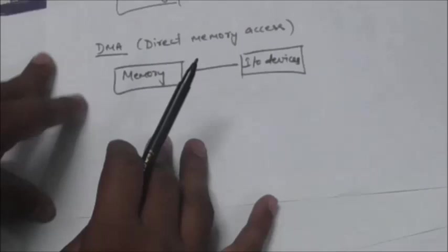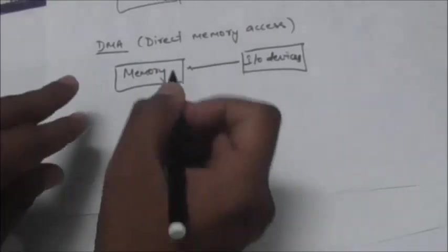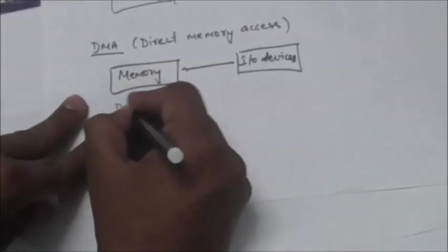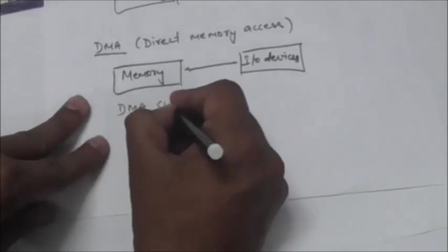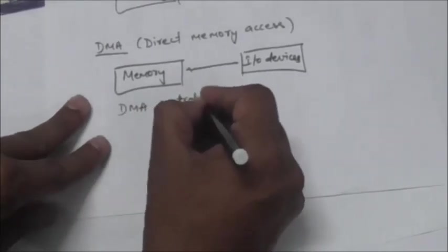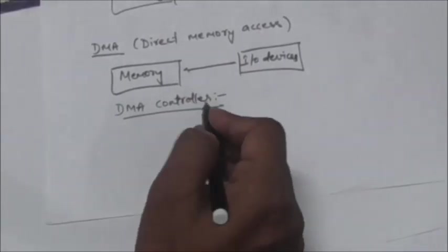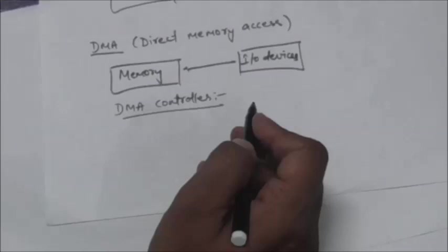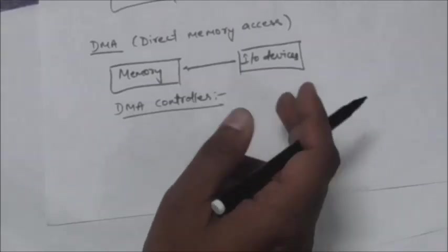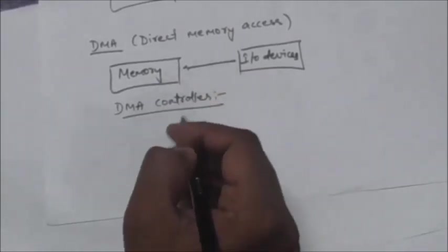In this case, there is a hardware unit called DMA controller and this DMA controller controls one or more devices and it allows devices to transfer data to or from the system's memory without the help of the processor.